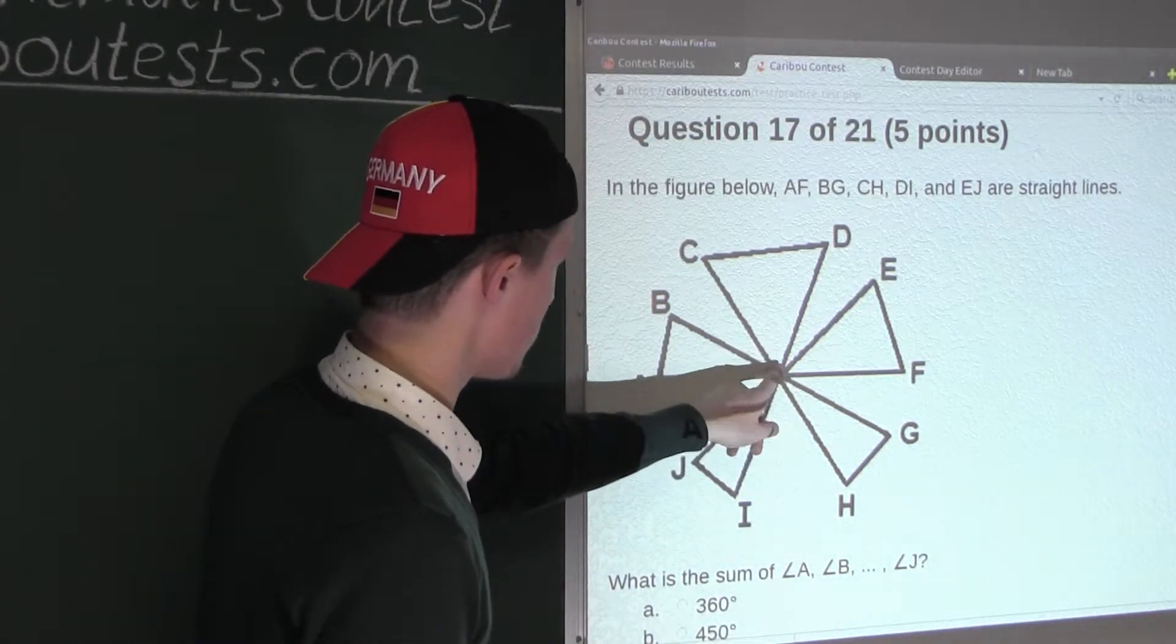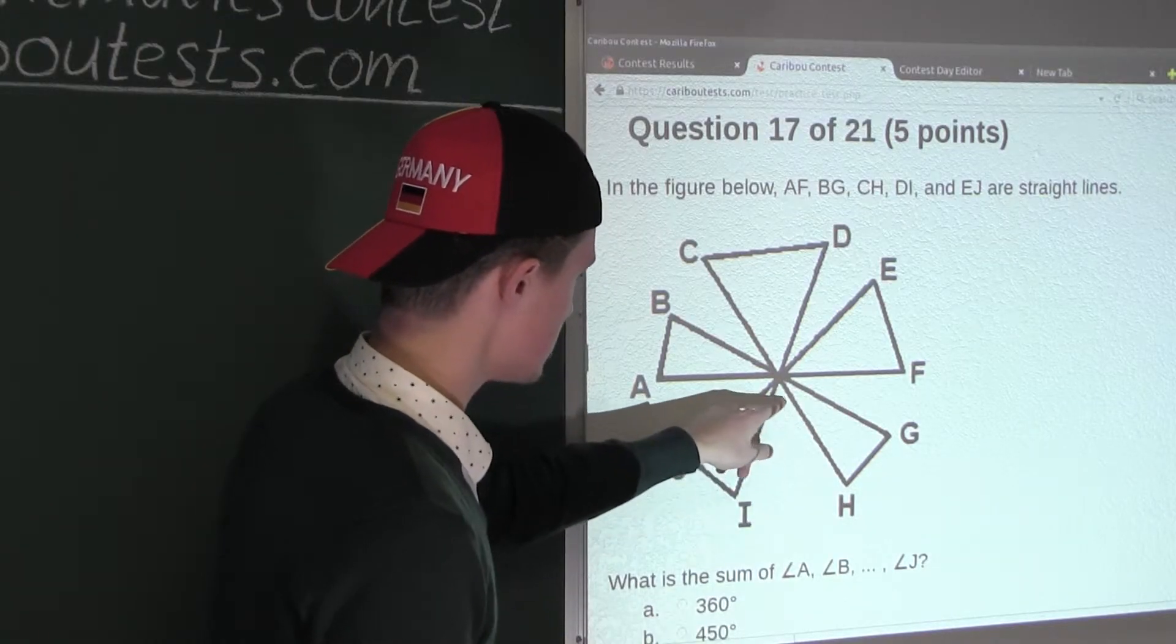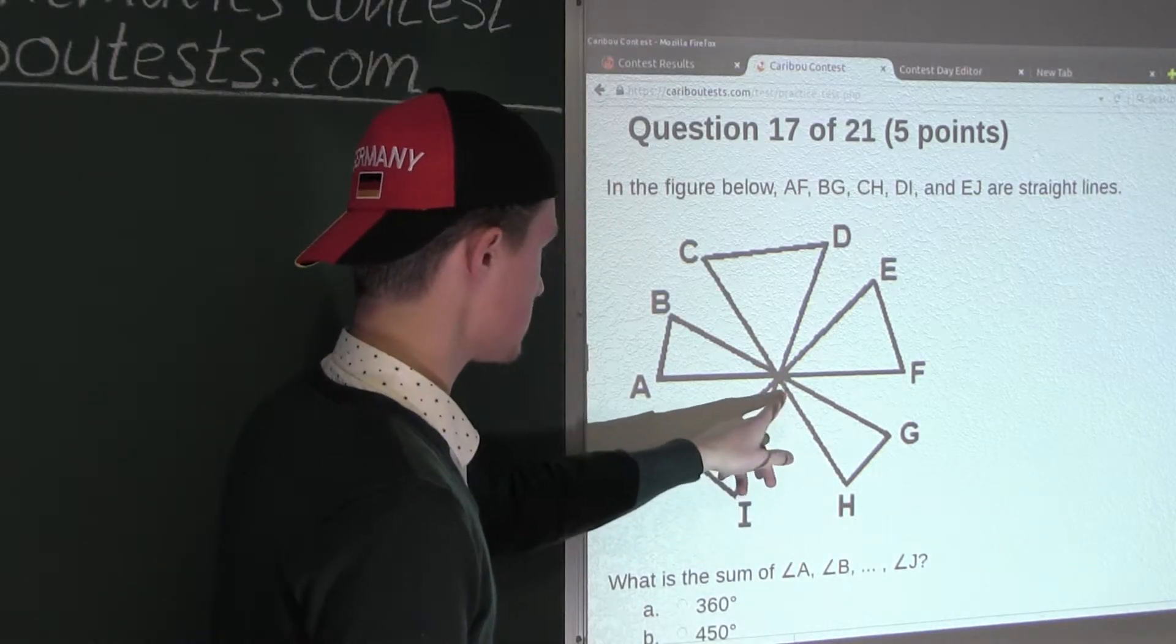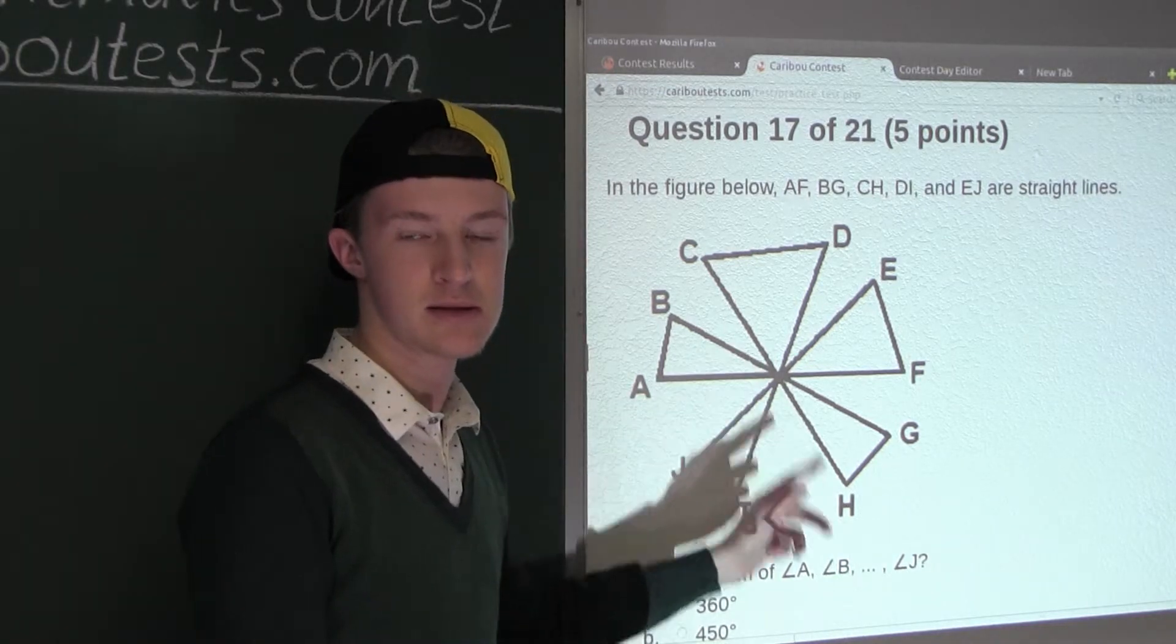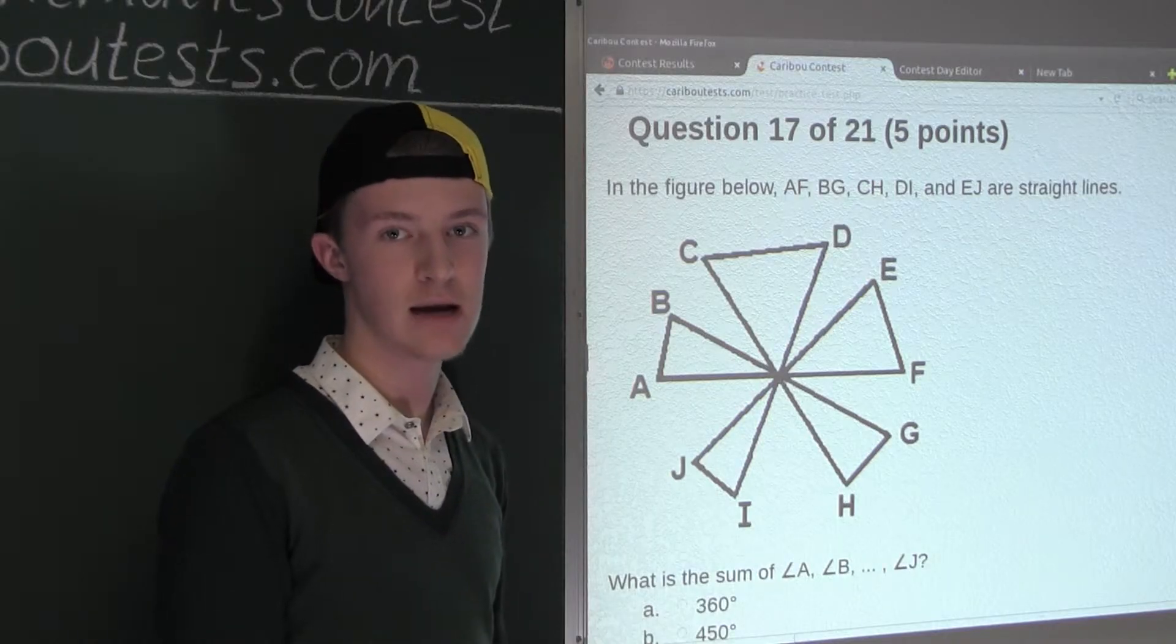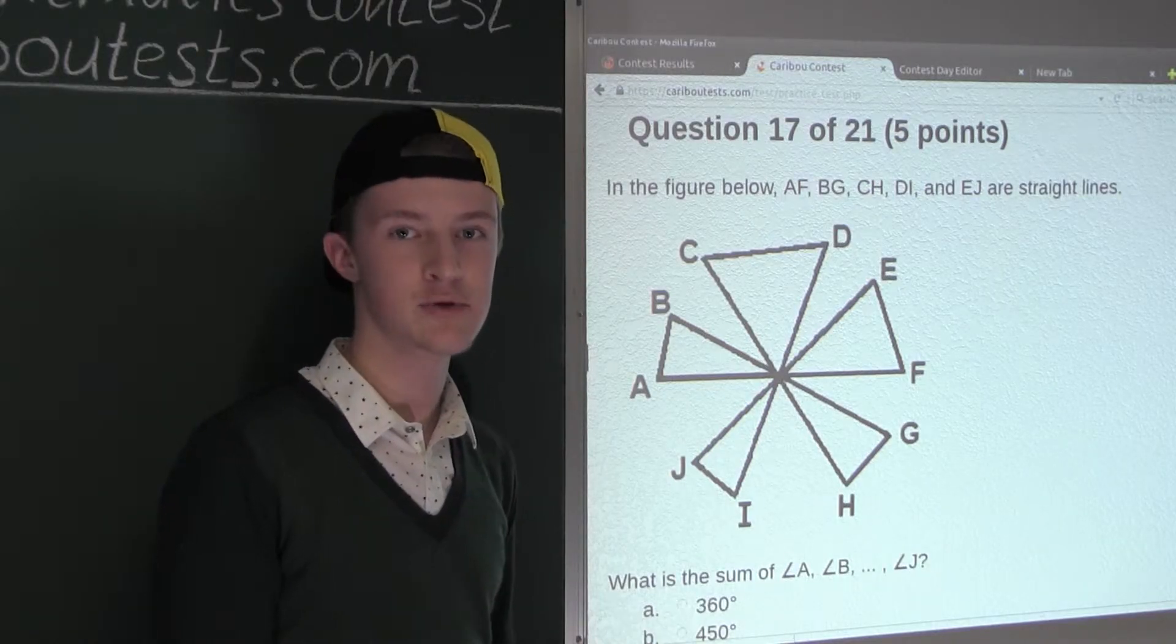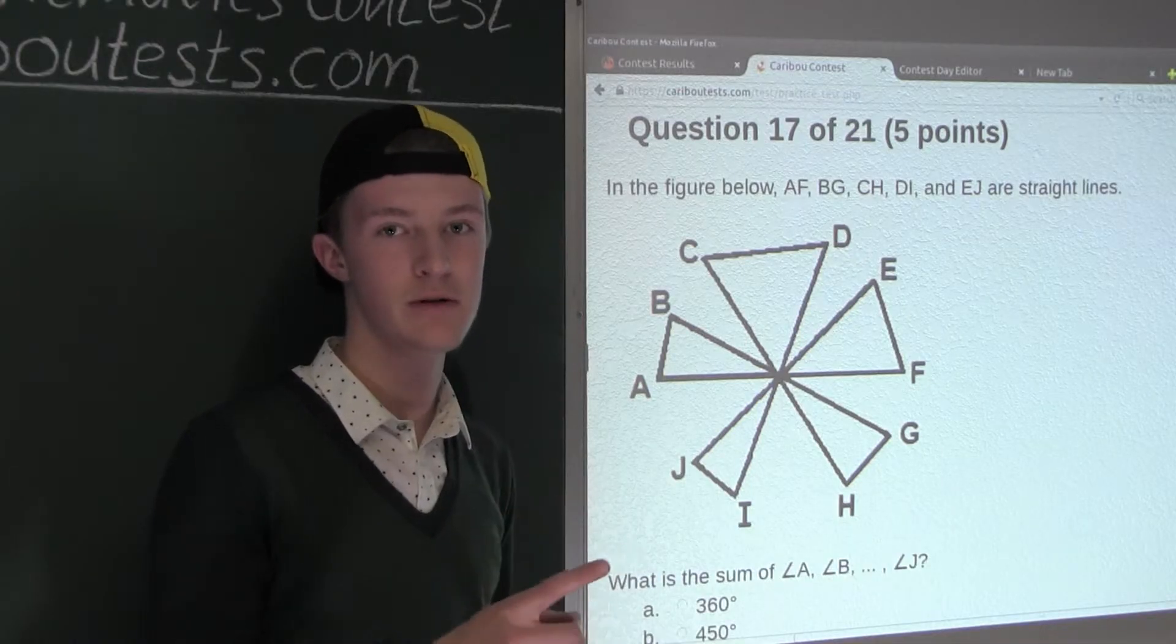Now since for example the middle angle here, its opposite corresponding angle is not part of any triangle, we don't want to subtract that from the sum. So out of those five pairs of corresponding angles, we want to subtract, for every single one of those five pairs, only one of the two angles.